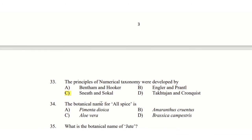34th question: The botanical name of Allspice is — option A: Pimenta dioica, option B: Amaranthus cruentus, option C: Aloe vera, option D: Brassica campestris. The answer is option A: Pimenta dioica.